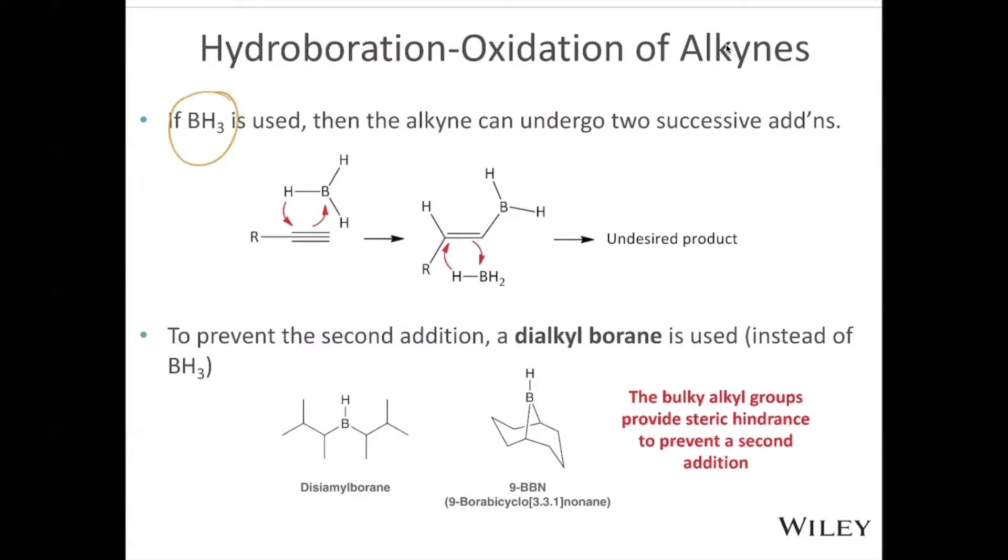For this reaction, if we use BH3, we can actually get an undesired product by having two successive reactions. In order to prevent that, we are going to use a different reagent, a special reagent here, which is called the dialkyl borane, which is very similar to BH3, except for we have these two larger carbon groups. This is called diisoamyl borane. And in this case, we have the BH here, and then this bicyclic compound. Both of these reagents can be used to provide the steric hindrance that is needed in order to prevent that second addition.